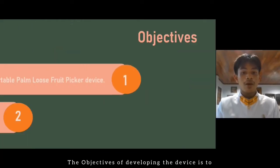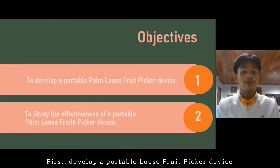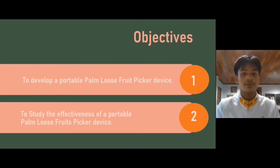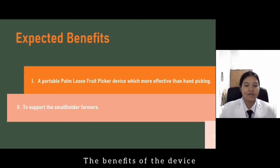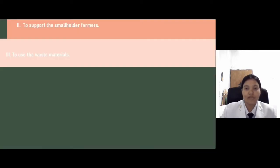The objective of developing the device is: first, to develop a portable loose fruit picker device; and second, to study the effectiveness of a portable loose fruit picker device. The benefit of the device: first, we have a portable loose fruit picker device with more effectiveness than hand-picking. Using this device can support the smallholder farmer because there will be no loose fruit left.